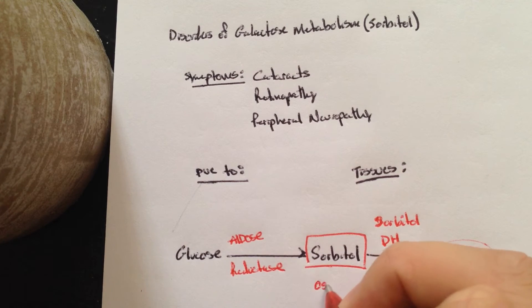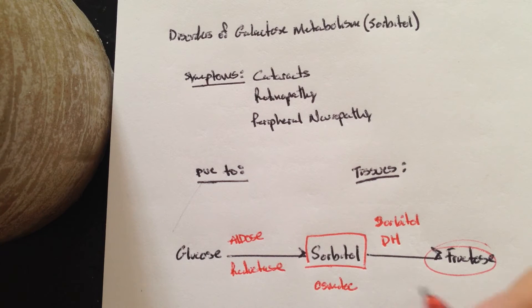Sorbitol is another osmotic agent, and it's going to attract H2O into the cells, and the cell is going to swell, and it's going to cause cataracts, say, in the lens of the eyes.